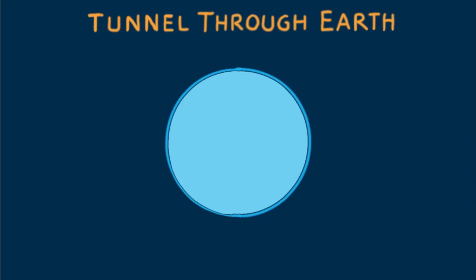In the previous lesson we showed how Earth's gravitational field decreases beneath Earth's surface, and how at Earth's center the field is zero.